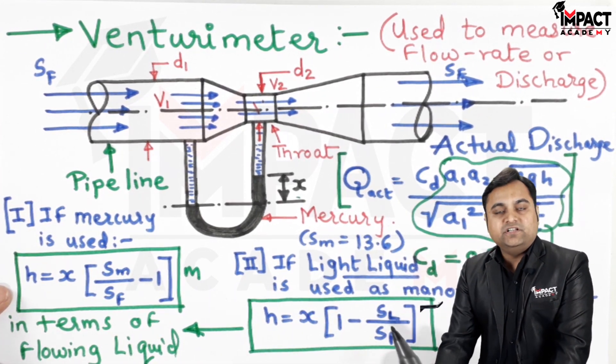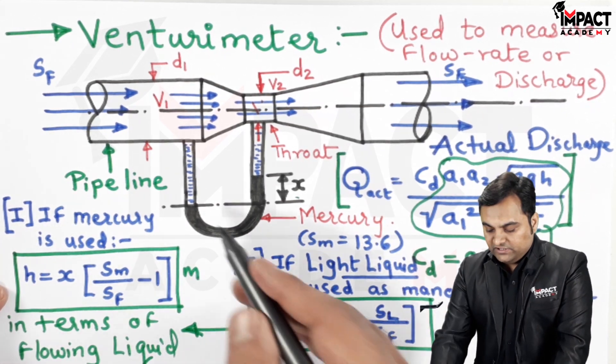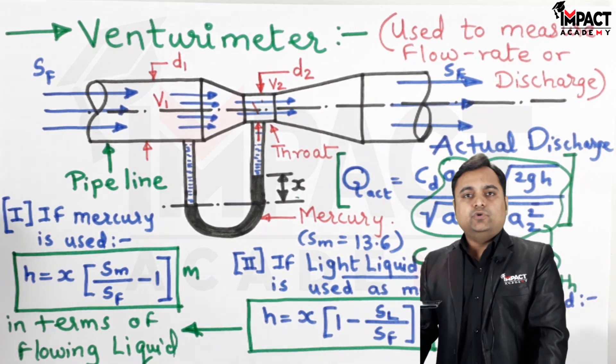Now Sl would be the specific gravity of the light liquid which we are going to use as the manometric fluid instead of mercury.